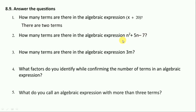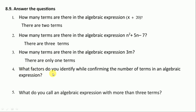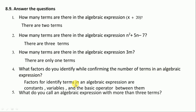Here we make one cut and another cut, so it is 1, 2, 3 — three terms. How many terms are there in algebraic expression 3m? Since there is multiplication, we write only one term. What factors do you identify when confirming the number of terms in an algebraic expression? The factors are: constant, variable, and the basic operator between them.